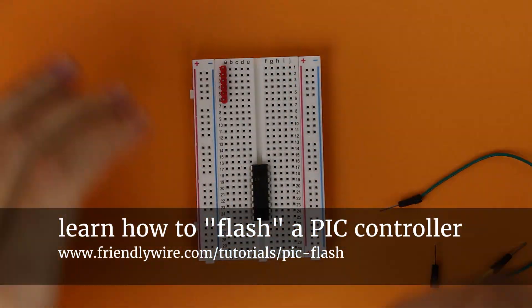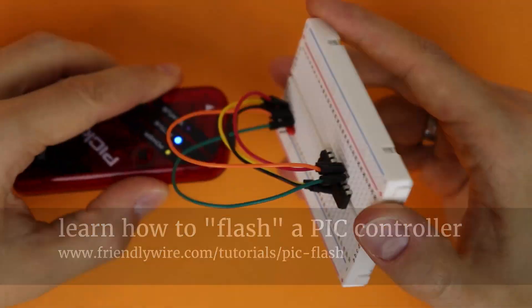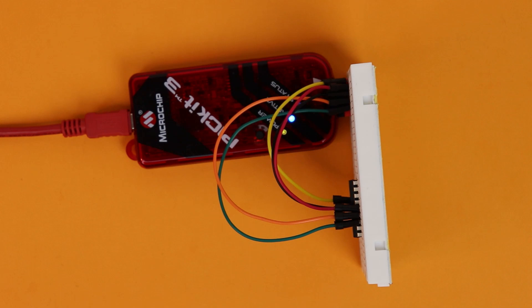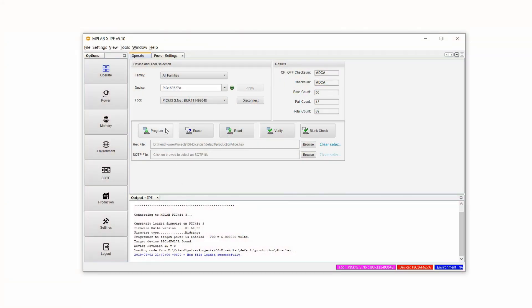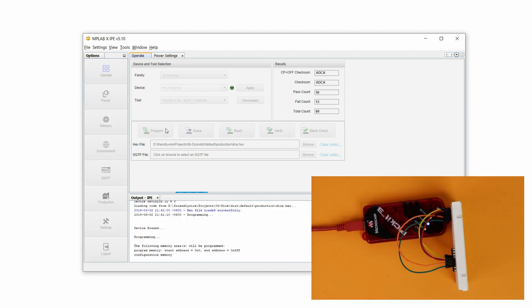First, we need to build a little programming board that we will use to connect the pick kit to the pick controller. And now we switch over to the computer screen. There it is, and we can click on program. And programming is complete.